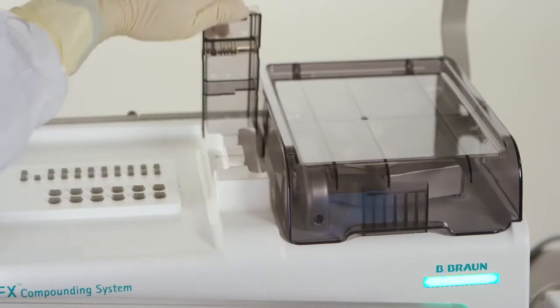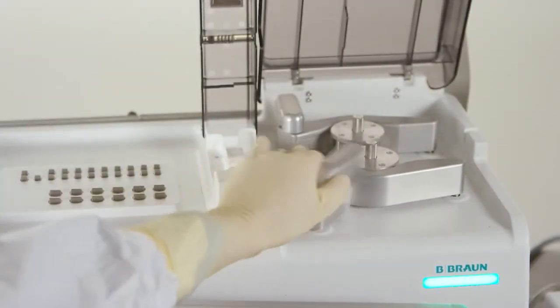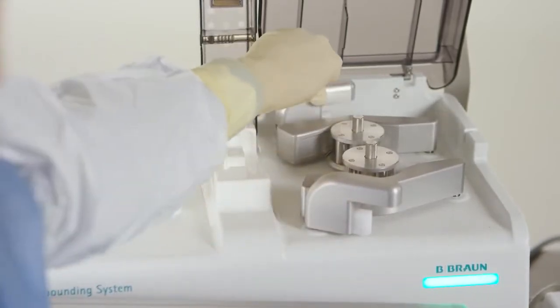To install the transfer set on the compounder, lift the detection sensor and pump doors and rotate the platen locks away from the platen to unlock.